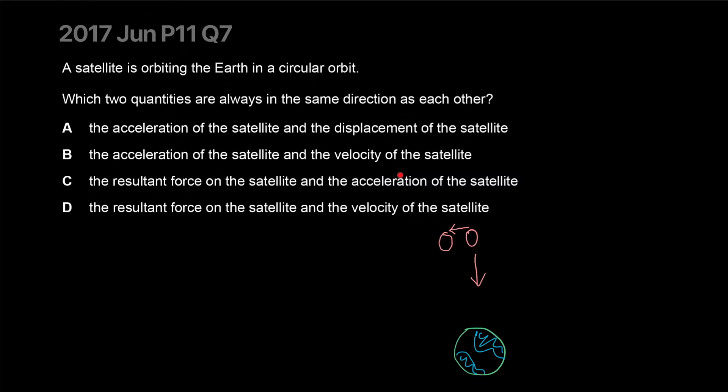The acceleration of the satellite and the velocity of the satellite. Velocity will also be horizontal, and that's how displacement is. And that's the rate of change of displacement. The resultant force on the satellite and the acceleration of the satellite. Force and acceleration go hand in hand. Wherever the resultant force is, they're essentially the same vector. The only difference is one is multiplied by mass. The resultant force of the satellite and the velocity, not the velocity. C is our correct answer.